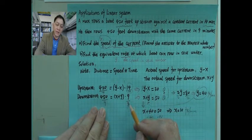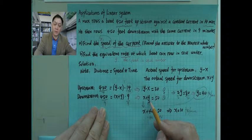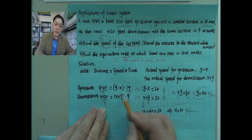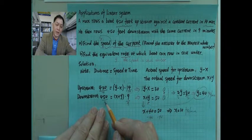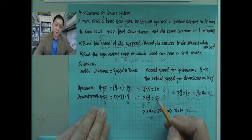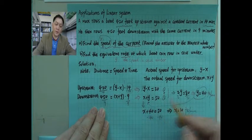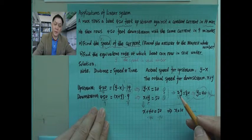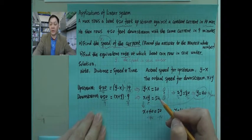Similarly, dividing both sides of the second equation by 9, we get x plus y equals 450 divided by 9, which is 50. So our second simplified equation is: x plus y equals 50. Now we have the system: y minus x equals 30, and x plus y equals 50.